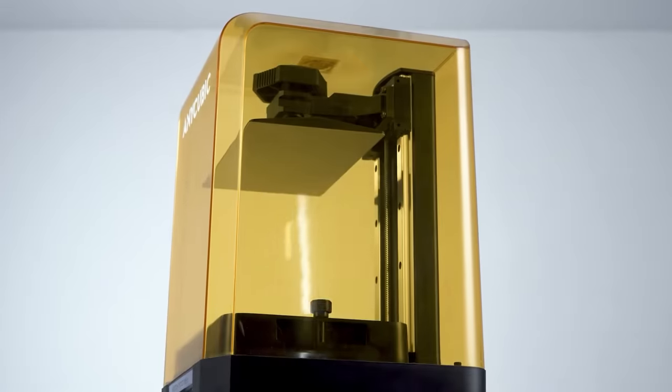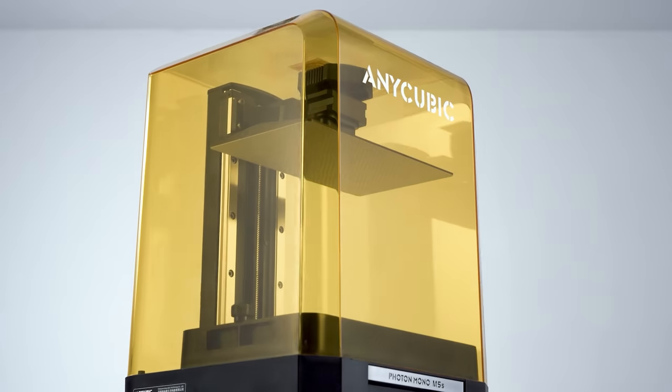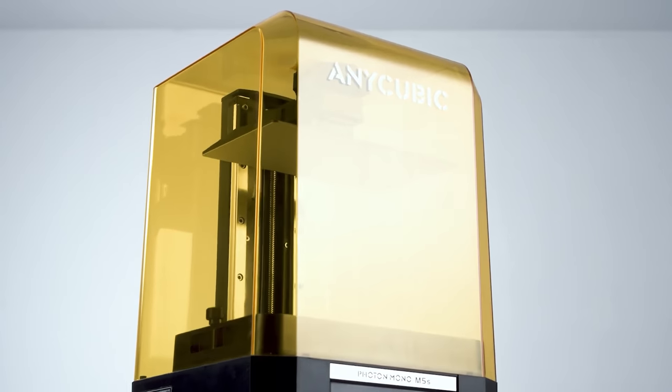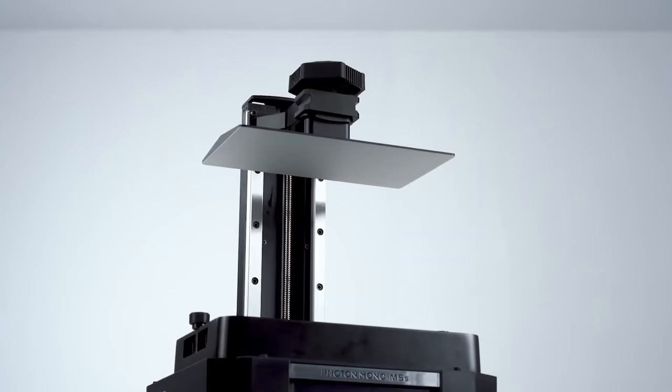This thing can even sense the amount of resin remaining in the tank and warn you if you're about to run dry. The M5S can print up to three times faster than the competition. You get all of this for just 500 bucks, and they'll throw in a free bottle of high-speed resin. To learn more about the Anycubic Photon Mono M5S, hit the description, and while you're down there, you can find links to every model I am about to show you.